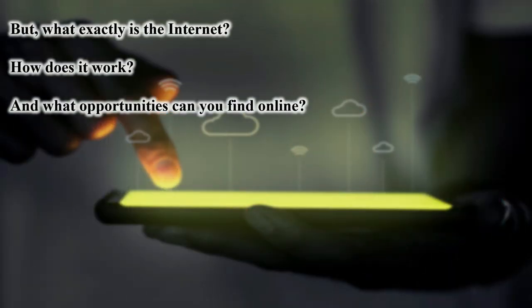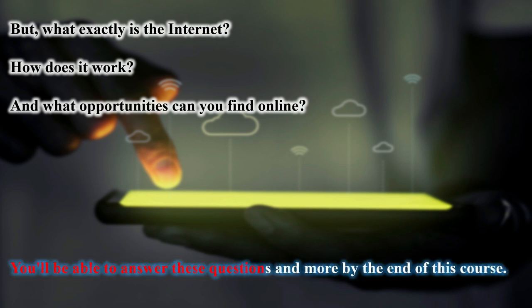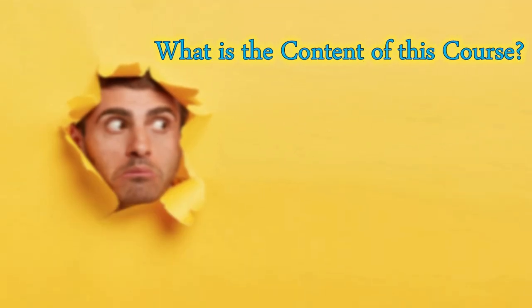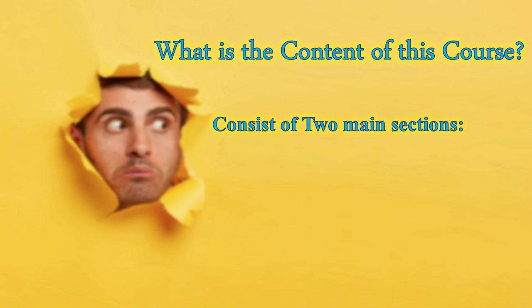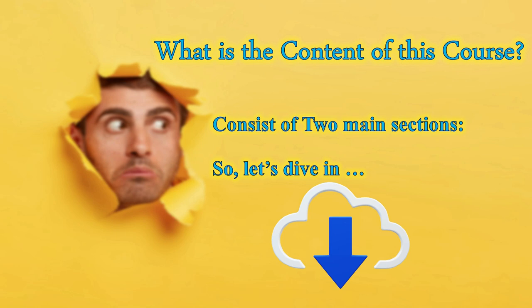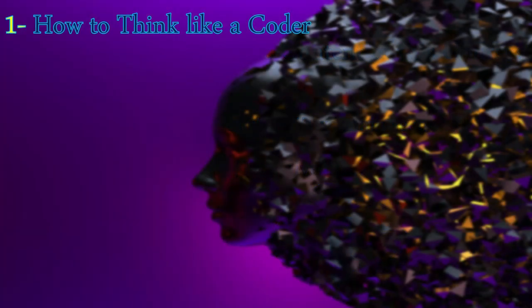There are some questions like: what is exactly the internet, how does it work, and what opportunities can you find online? These are the questions that you will understand well enough throughout this course. So what is the content of this course? This course consists of two main sections. Let's dive in to see what happens throughout this course.